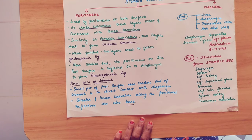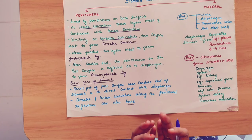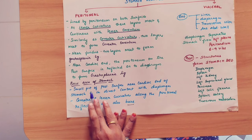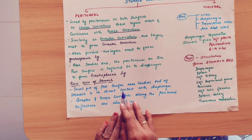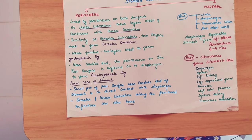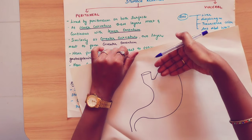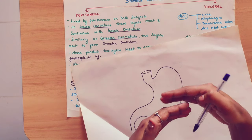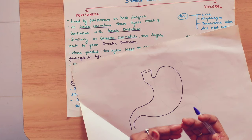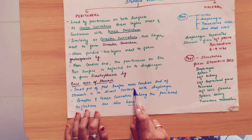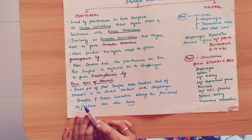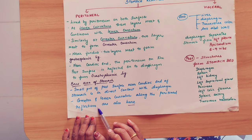Now coming to the bare area of the stomach. The bare area is not covered by peritoneum. First point: a small part of the posterior surface near the cardiac end of the stomach is in direct contact with the diaphragm. Second: along the greater curvature and lesser curvature, the peritoneal reflections are also bare.